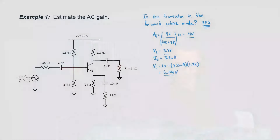Now we can move on to the gain calculation. Let's draw an equivalent circuit model for the small signal. It's definitely small because it's only 1 millivolt peak to peak. I can also see that my frequency is a radio frequency here, 1 megahertz. I see that these capacitors are fairly large, so I'm guessing it's not going to be a problem with filtering.